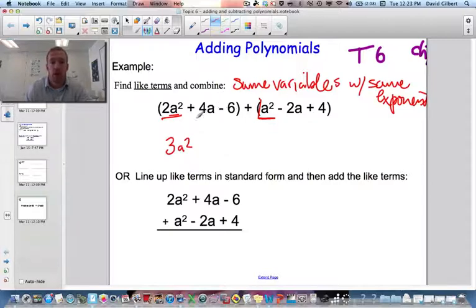Now there is a 4a. So it's an a to the 1st. Here's an a to the 1st. And actually I'll just circle that one. I'll use different symbols to identify the like terms. So this is a positive 4a minus 2a. 4 minus 2 is a positive 2a.